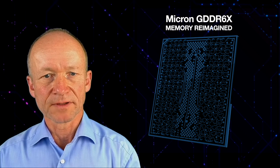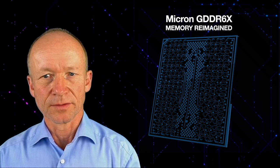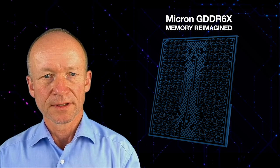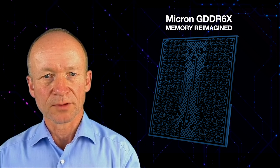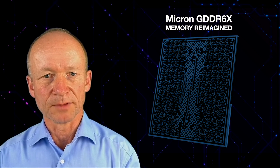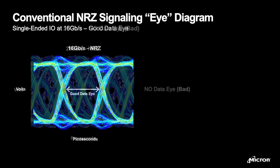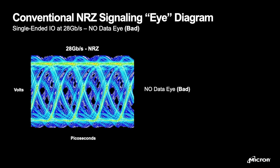Industry demands bandwidth beyond current 16 gigabit per second of GDDR6 to increase system performance. Micron's GDDR6X provides the technology to deliver bandwidth up to 32 gigabit per second. Conventional NRZ signaling can deliver 16 gigabit per second. But when you push bandwidth to 28, the eye collapses and you no longer receive data.